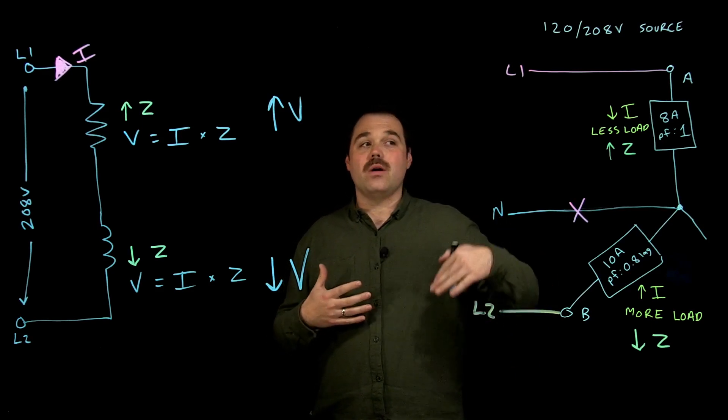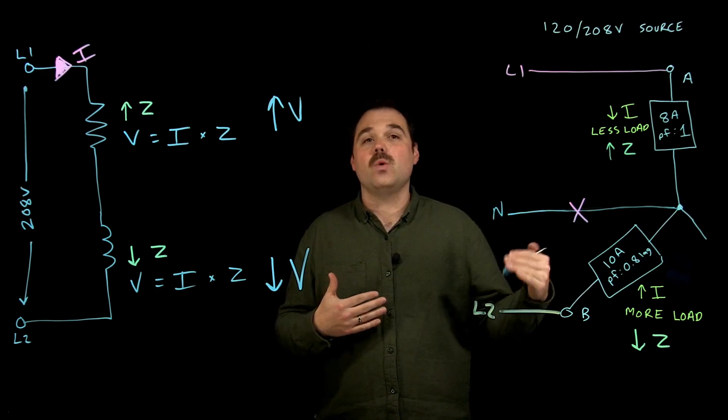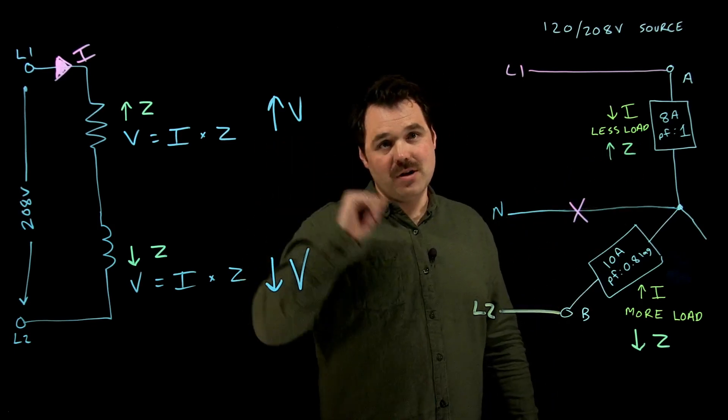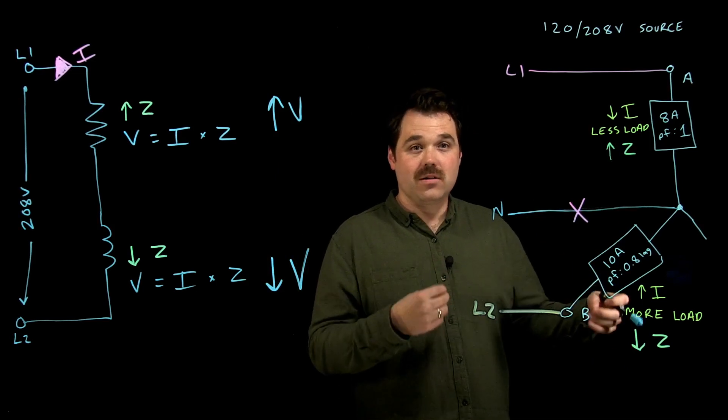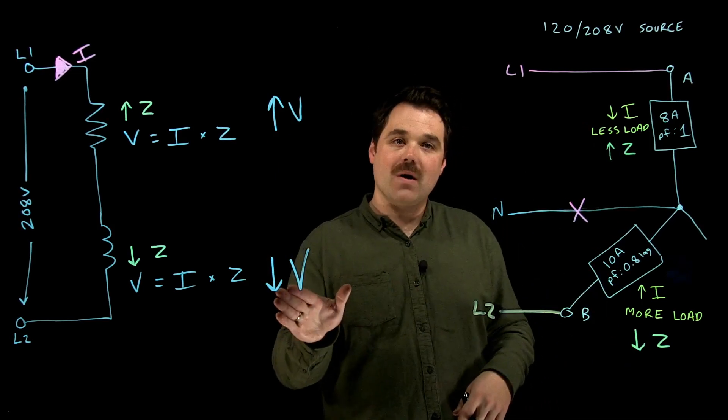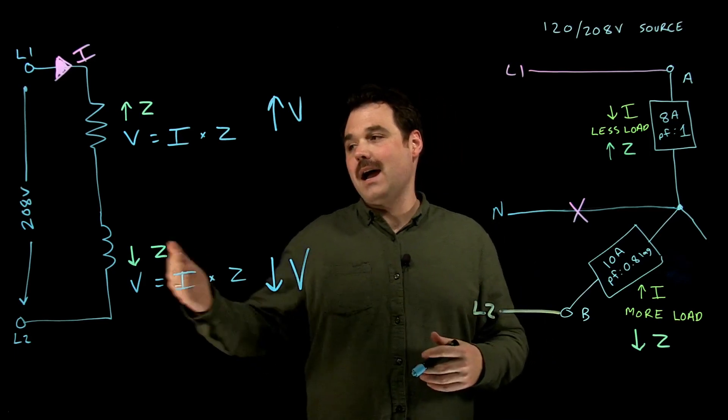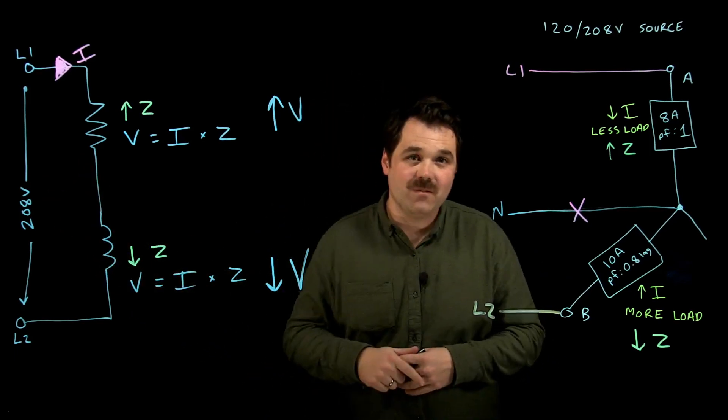So again, our least loaded circuit or the circuit with the highest impedance sees a higher volt drop. Our highest loaded circuit or our lowest impedance sees a lower voltage drop. And of course, those would vectorally add up to equal that 208 volts source.